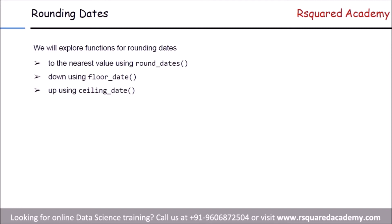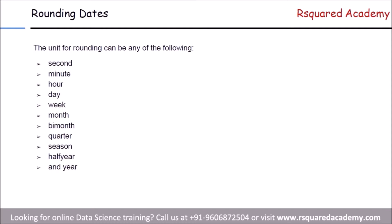You will be familiar with the floor and ceiling functions when dealing with numbers — rounding up or rounding down values. In case of dates we use these functions from lubridate: round_date, floor_date, and ceiling_date. The unit for rounding can be any of the following: second, minute, hour, day, week, month, bimonth, all the way till year.